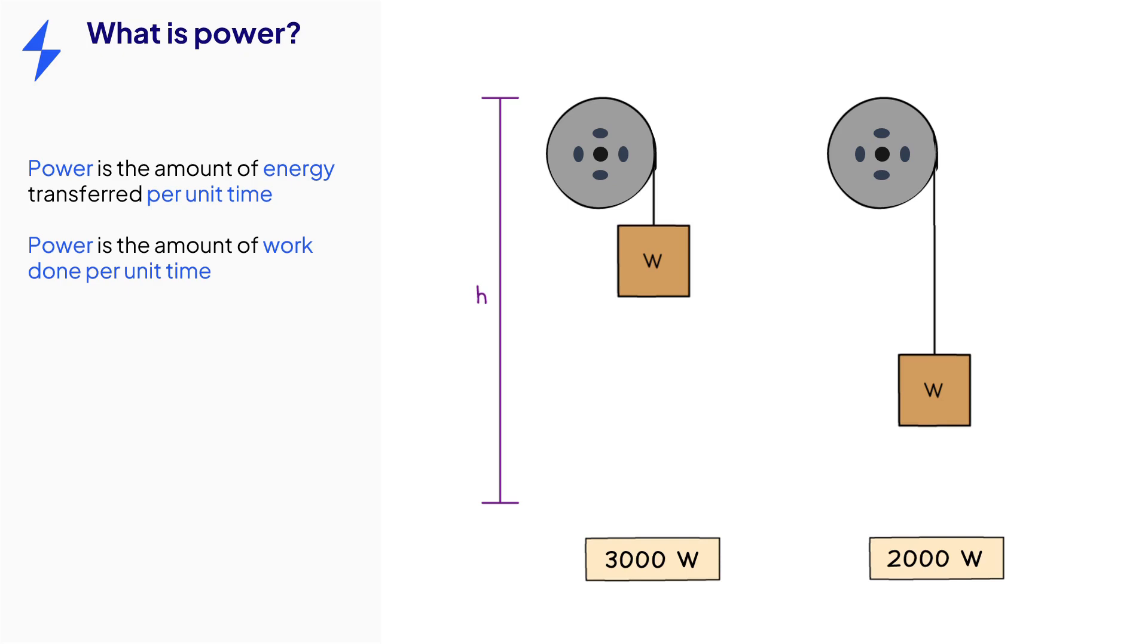The unit for power is the watt which is equal to one joule per second or one newton meter per second.